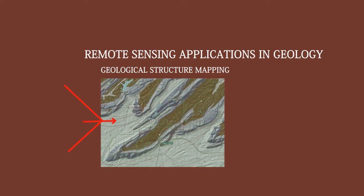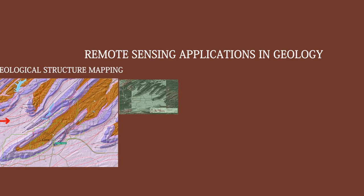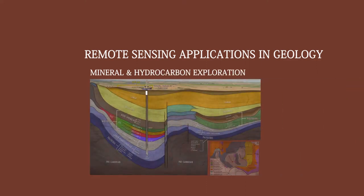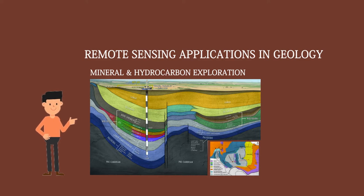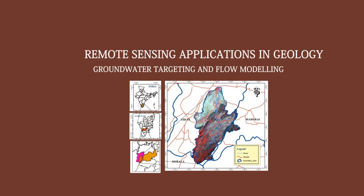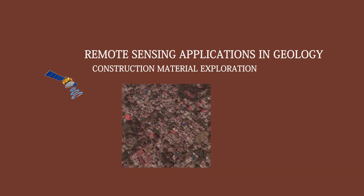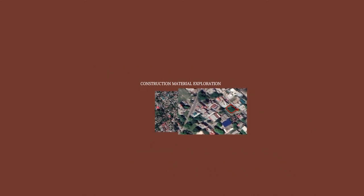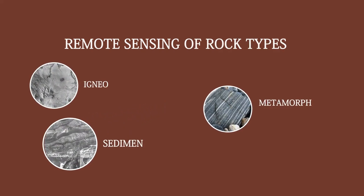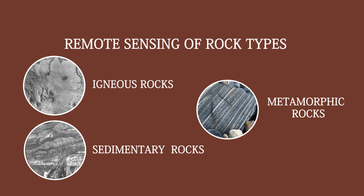Remote sensing is more effective and powerful in synergy with complementary data sets such as geophysical data, geochemical data, surface geological information and groundwater data. Remote sensing of rock types includes igneous rocks, sedimentary rocks, and metamorphic rocks, along with mineral and rock identification by spectroscopic analysis and hyperspectral remote sensing techniques.